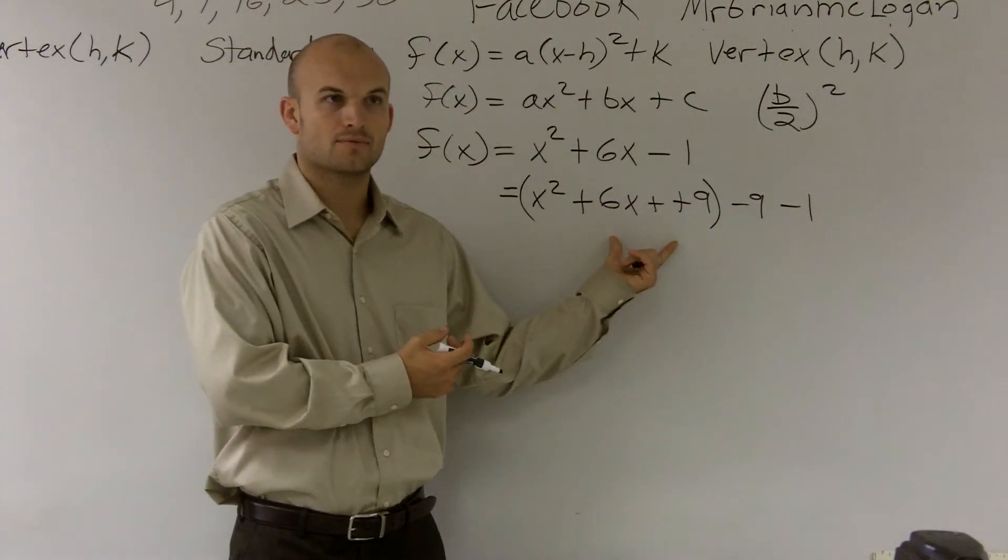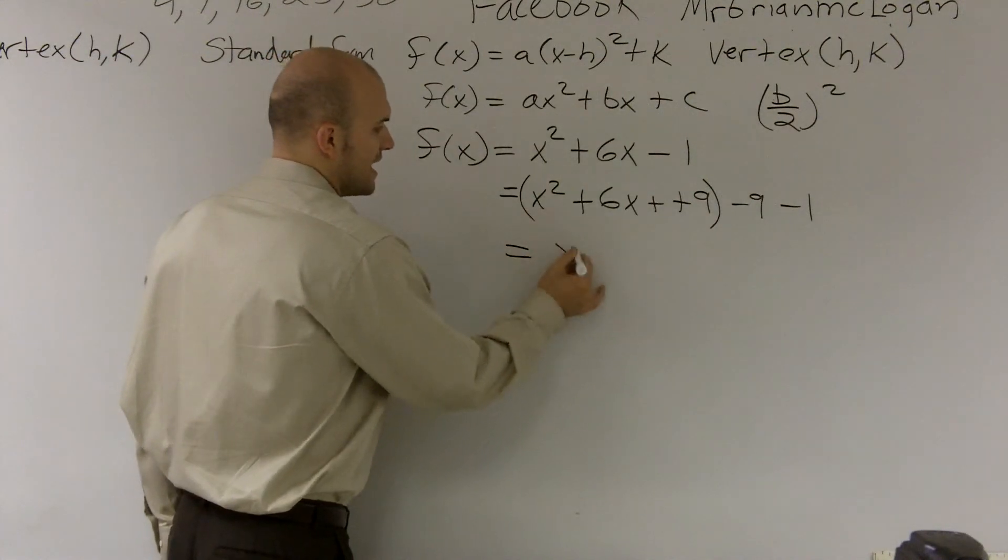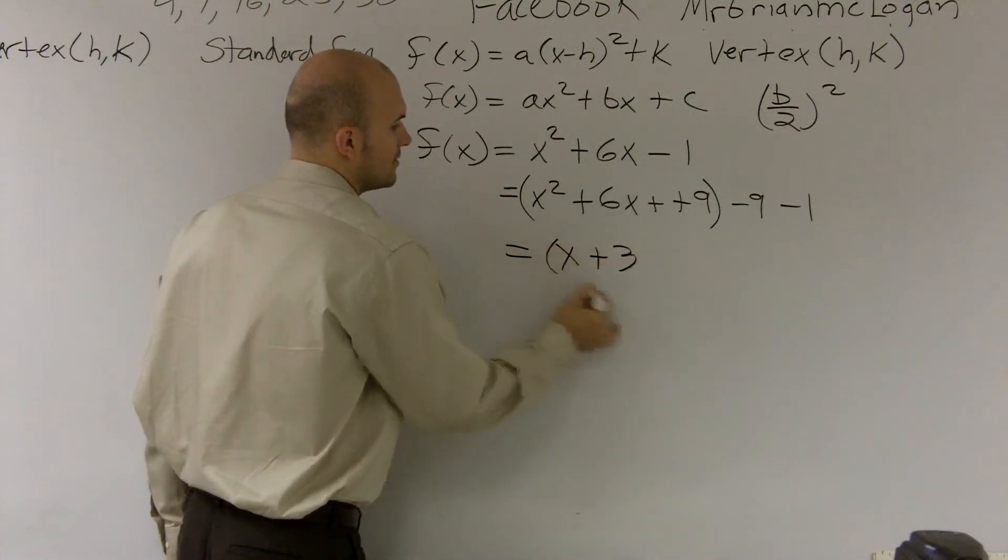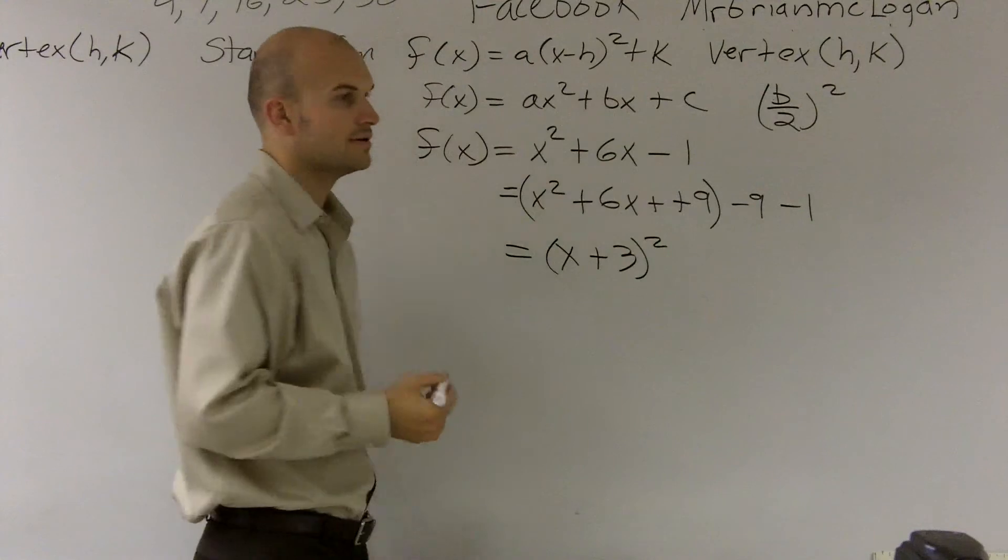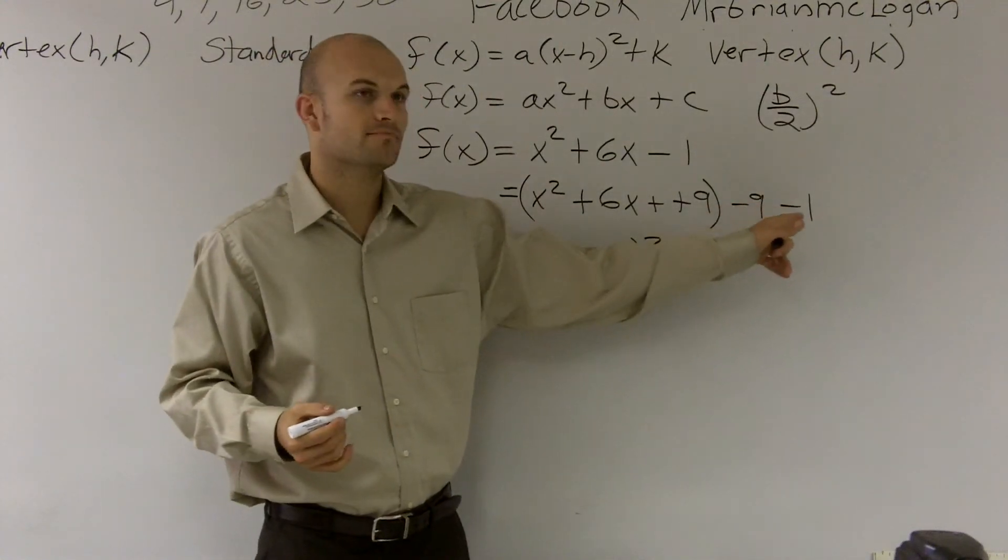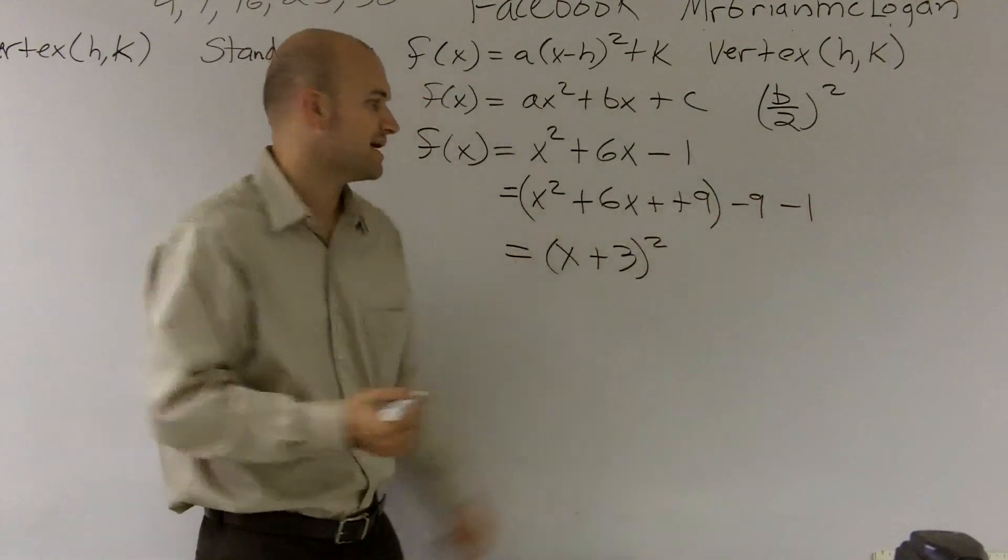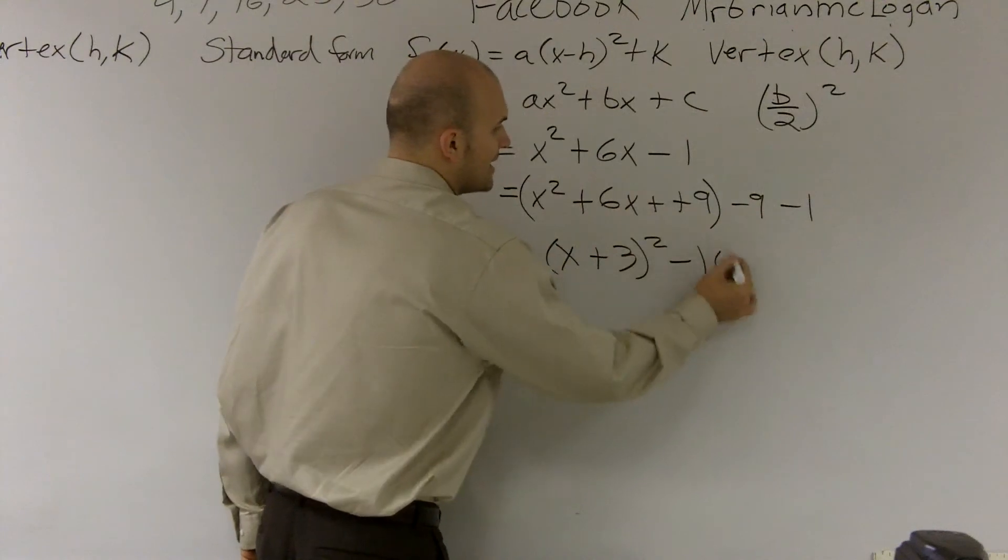So you can say x plus 3 squared negative 9 minus 10, or negative 9 minus 1 is going to give you minus 10.